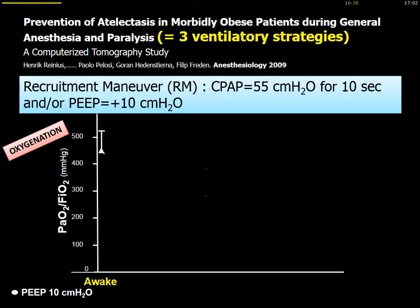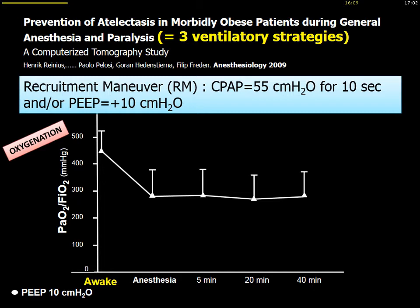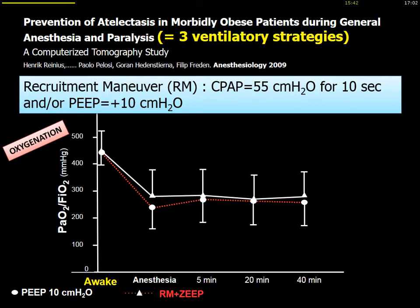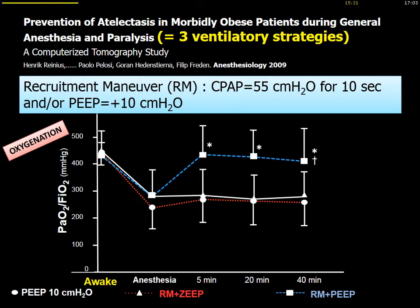The first strategy is to apply PEEP alone at 10 cmH₂O, and they evaluated different physiological variables including oxygenation. Just after induction of general anesthesia, oxygenation decreases and remains low for several minutes after surgery. They then evaluated a second group using a recruitment maneuver — a CPAP of 55 cmH₂O for 10 seconds. This pressure is needed to open closed alveoli without barotrauma for such a short period. The combined group used recruitment maneuver to open the lung and maintained it open with PEEP at 10 cmH₂O.